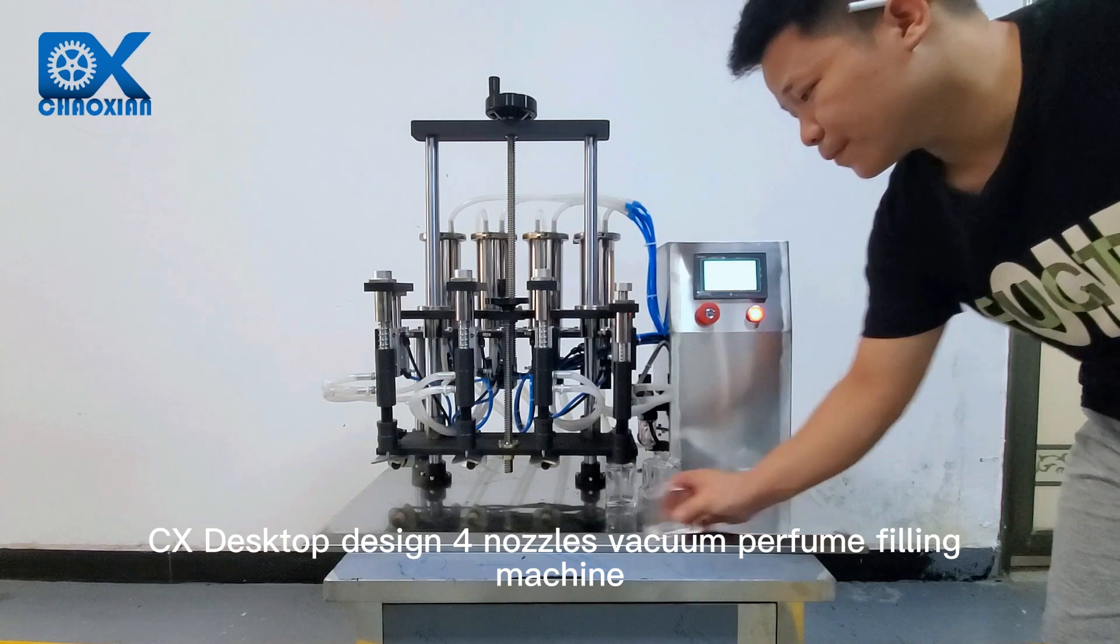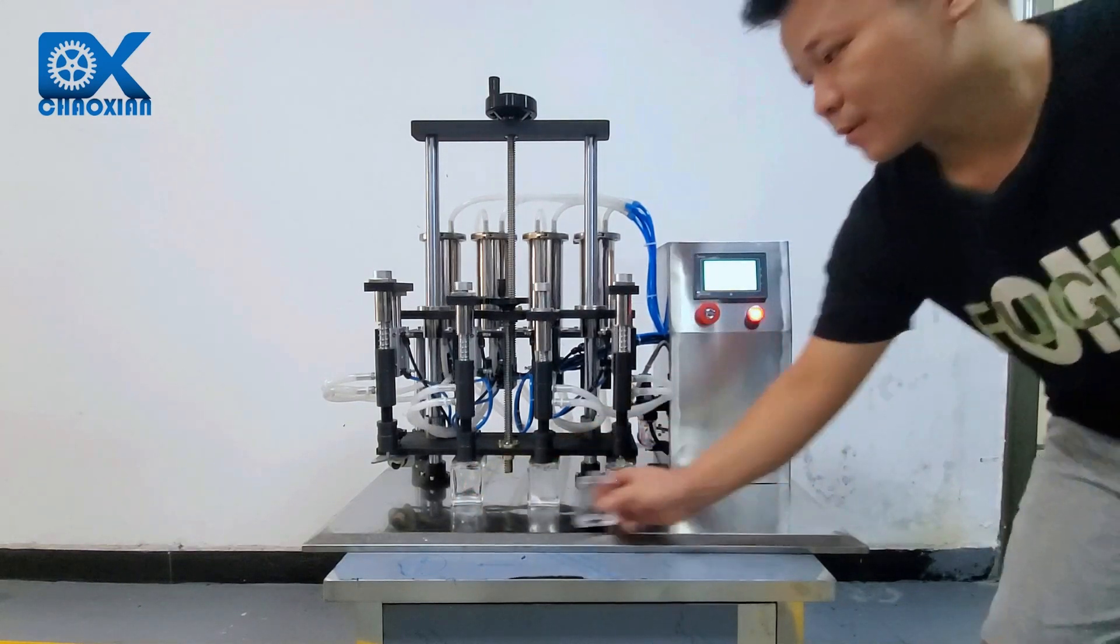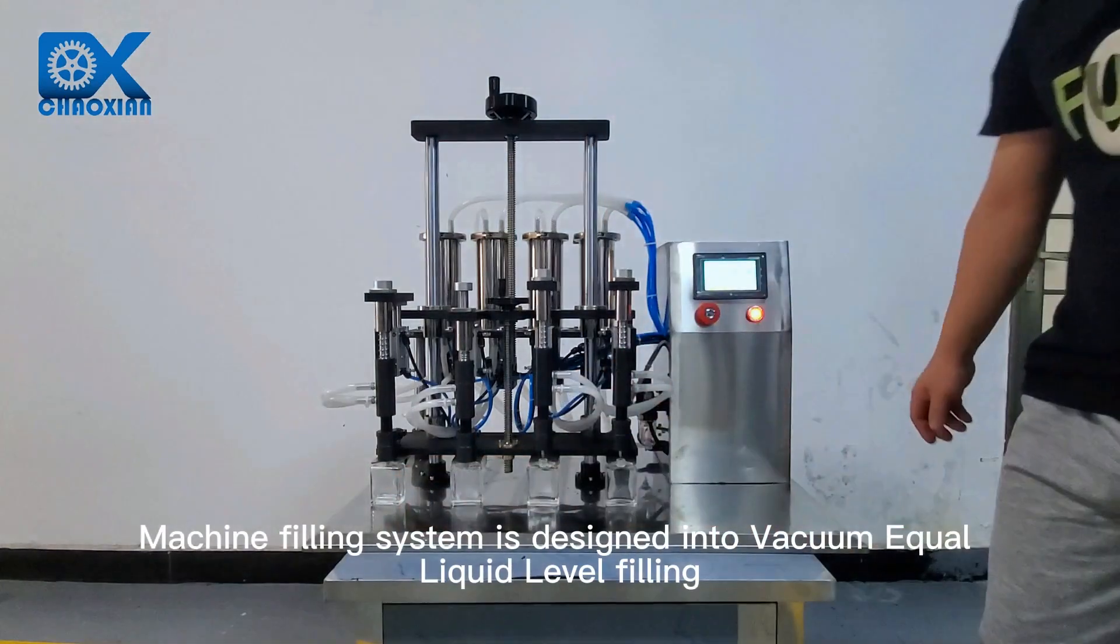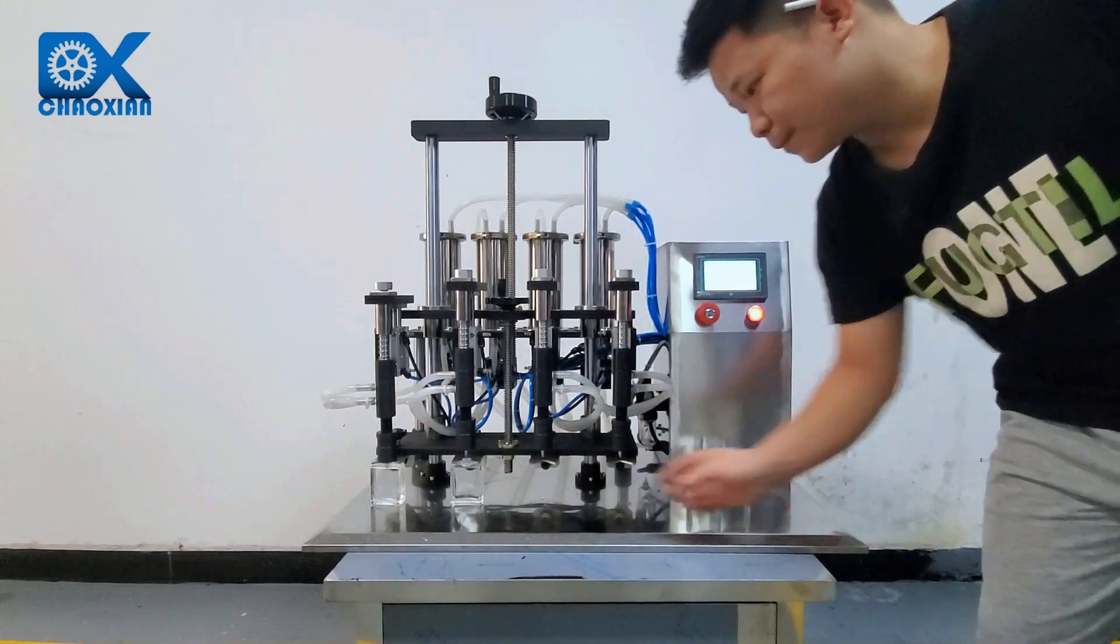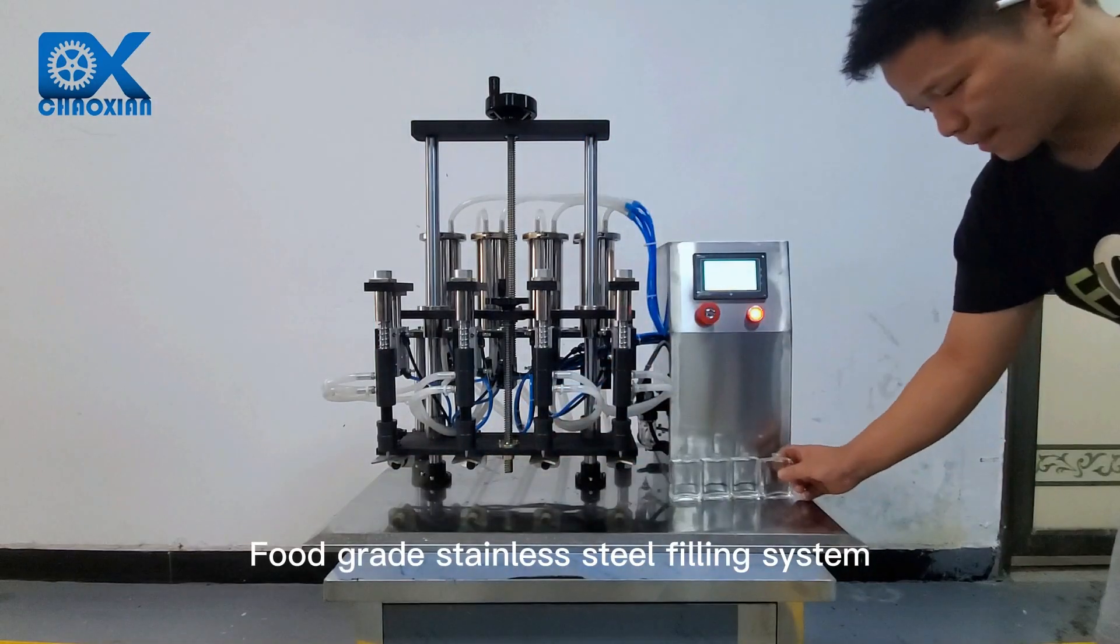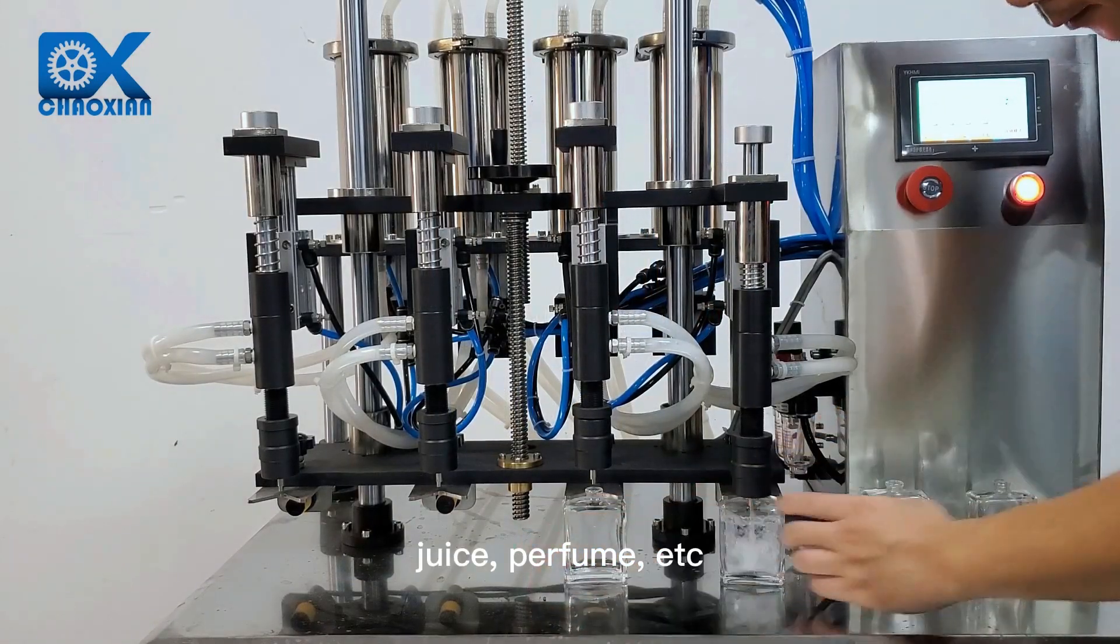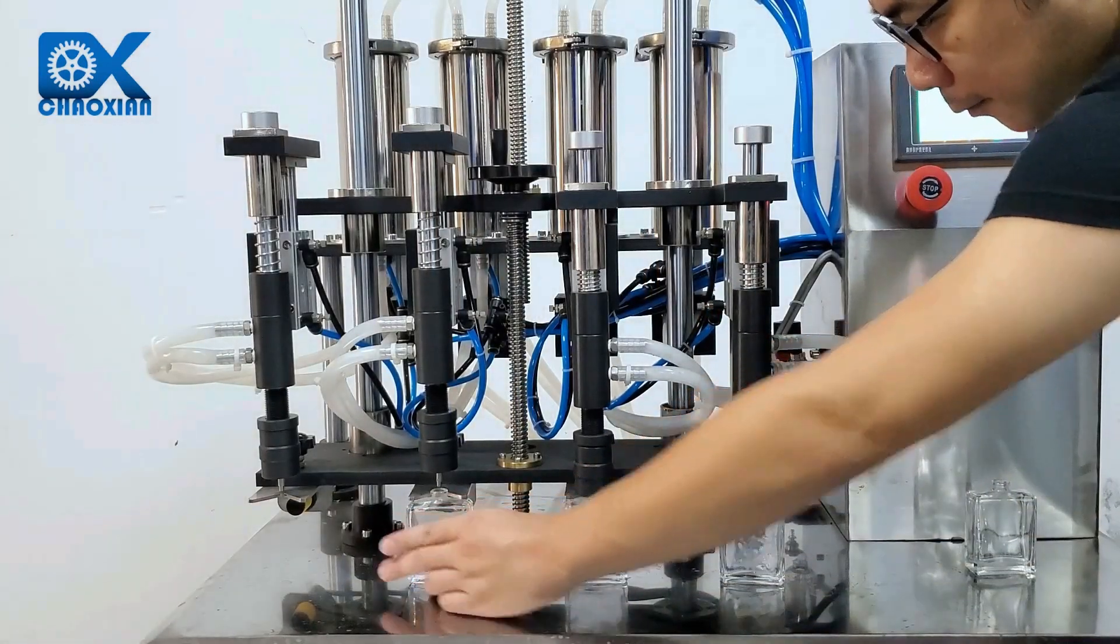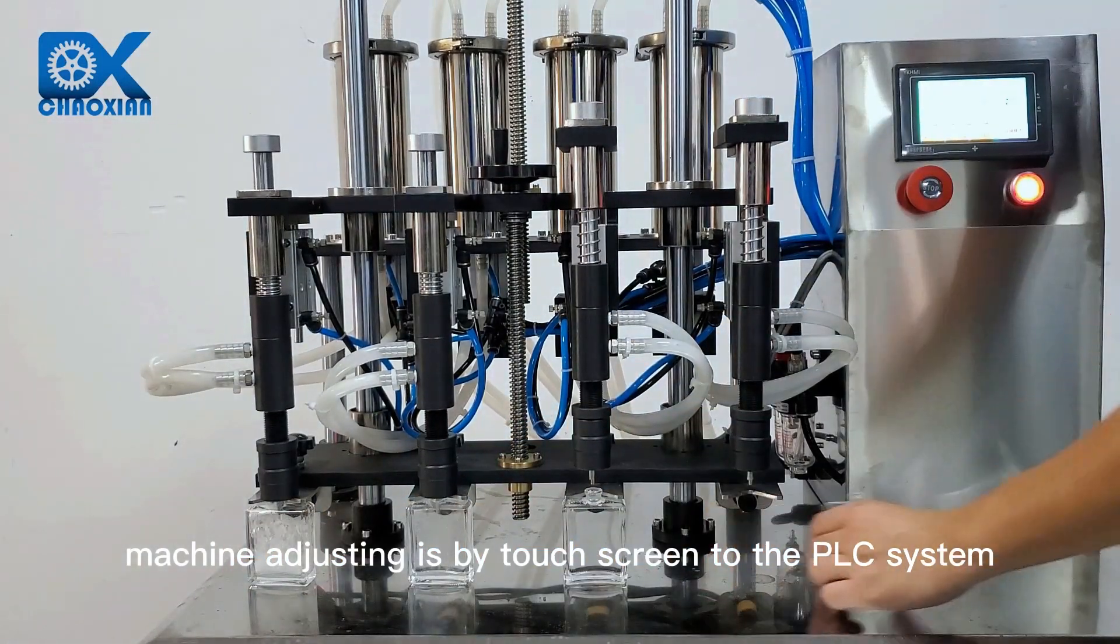CX desktop design for nozzles vacuum perfume filling machine. The machine's filling system is designed into vacuum equal liquid level filling with food grade stainless steel, suitable for filling oil, wine, juice, perfume, etc. Machine adjusting is by touchscreen to the PLC system.